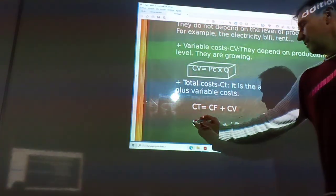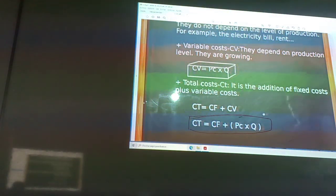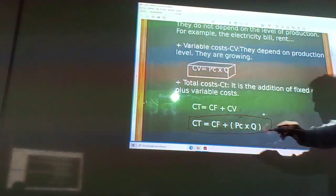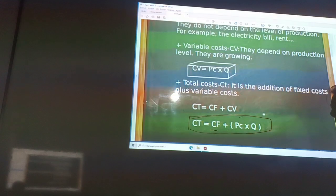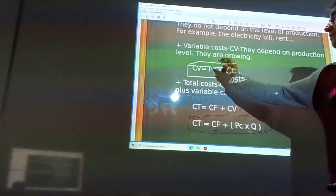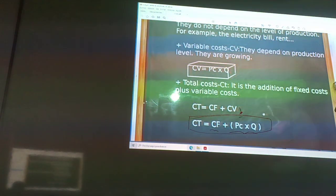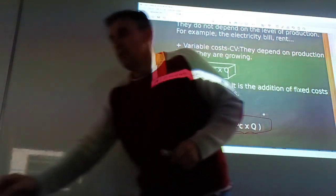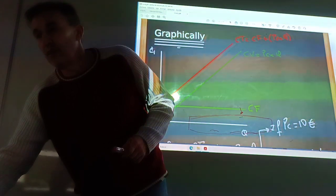This is the representation of the total cost. Total cost is the addition of fixed costs and variable costs, as I showed you five minutes ago. So, now we have the graphical representation.